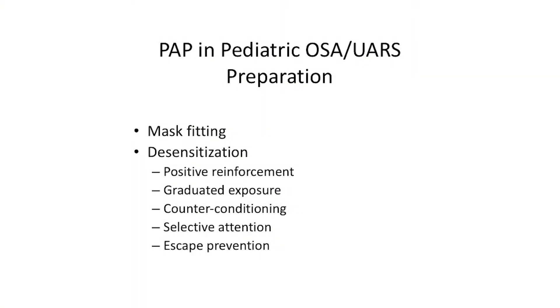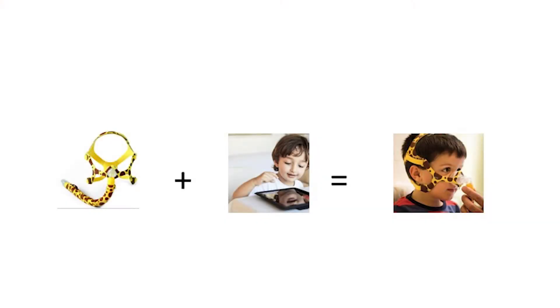How do we make children willing? First is mask fitting — the child is sent to a DME, which fits the child with a mask depending on their orofacial size and preference. Then we go through a whole set of interventions: positive reinforcement and graduated exposure. In short, you combine a CPAP mask with an iPad and they're going to wear it. You give them something they like — these days it's electronic devices — and once they take the mask off, you take the device away.